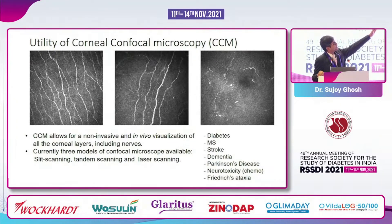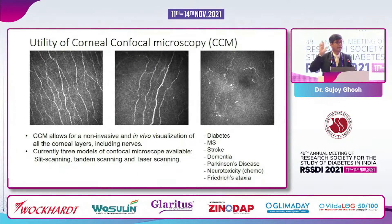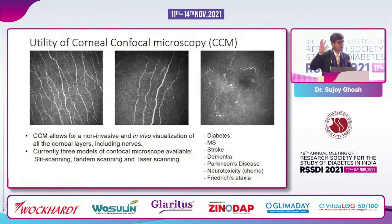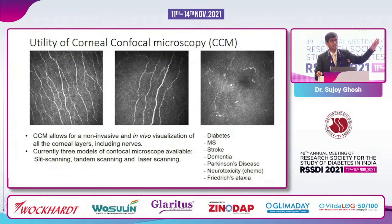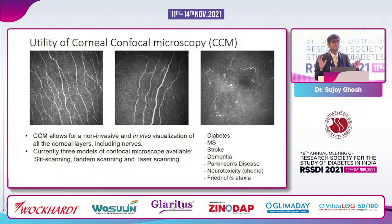If you look at the utility of corneal confocal microscopy, I've put up three of our own patients' photographs. On the left-hand panel is what it normally looks like. There are three parameters we are supposed to look at — similar to how in fundoscopy we look at the disc, macula, vessels, hard and soft exudates. Here, you look at nerve fiber length, nerve branch density, and nerve fiber density. As you go to the other side, you will see that nerve fiber length goes down, nerve fiber density goes down, and nerve branch density goes down.